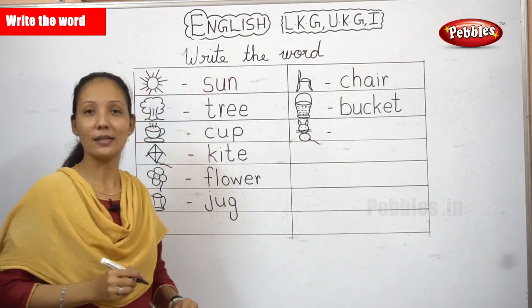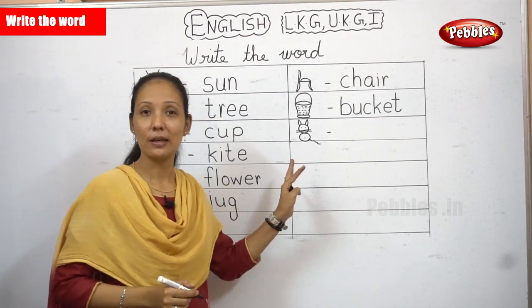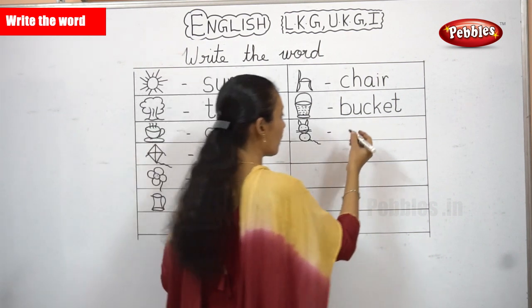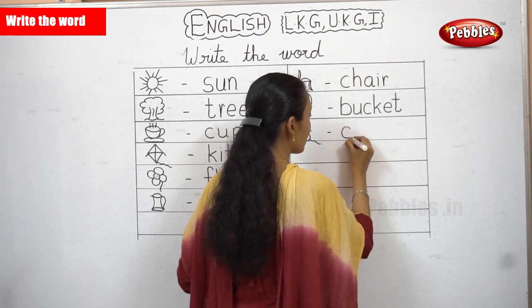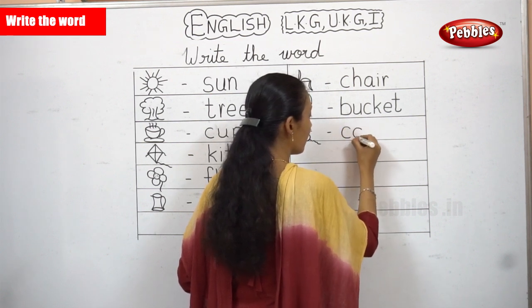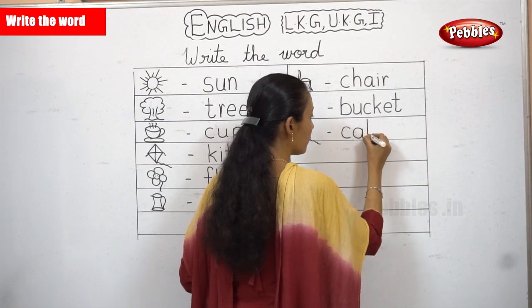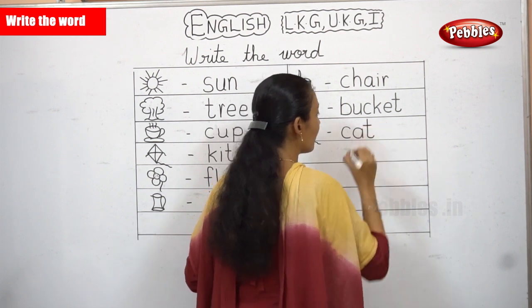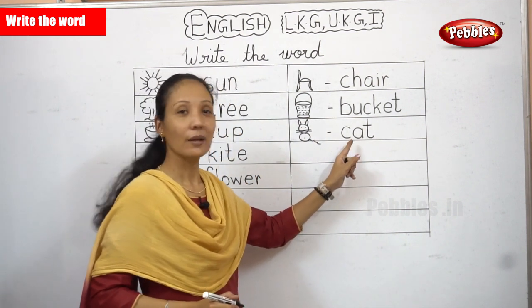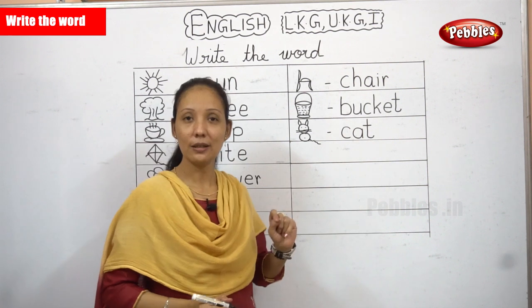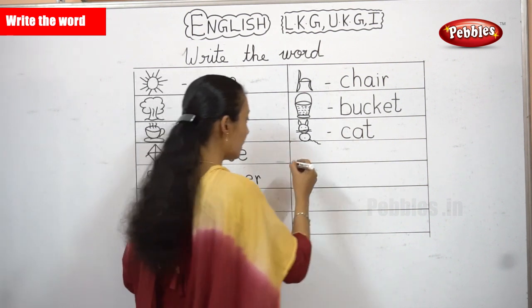What is this? A cat. The spelling for cat is C-A-T. Cat. Once again: C-A-T. Cat. Your next one.